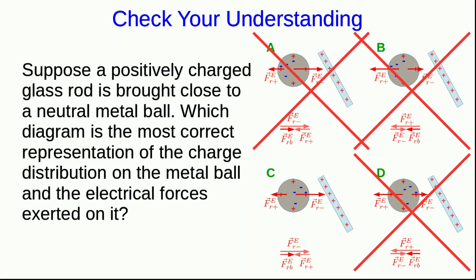where the negative charges are being pulled towards the rod, and as a result, there's a large attractive force between the negative charges and the rod, and a smaller repulsive force that the rod is exerting on the positive charges in the ball.